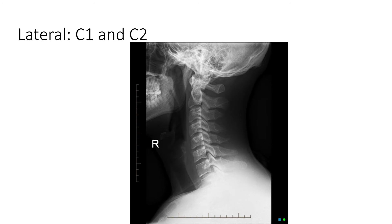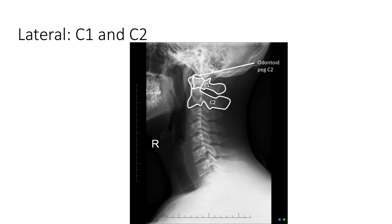We will now look at C1 and C2. The distance between the posterior aspect of the arch of C1 and the anterior aspect of the odontoid peg should be no more than three millimeters in adults. The ring at the base of C2 should remain unbroken anteriorly, posteriorly, and superiorly.